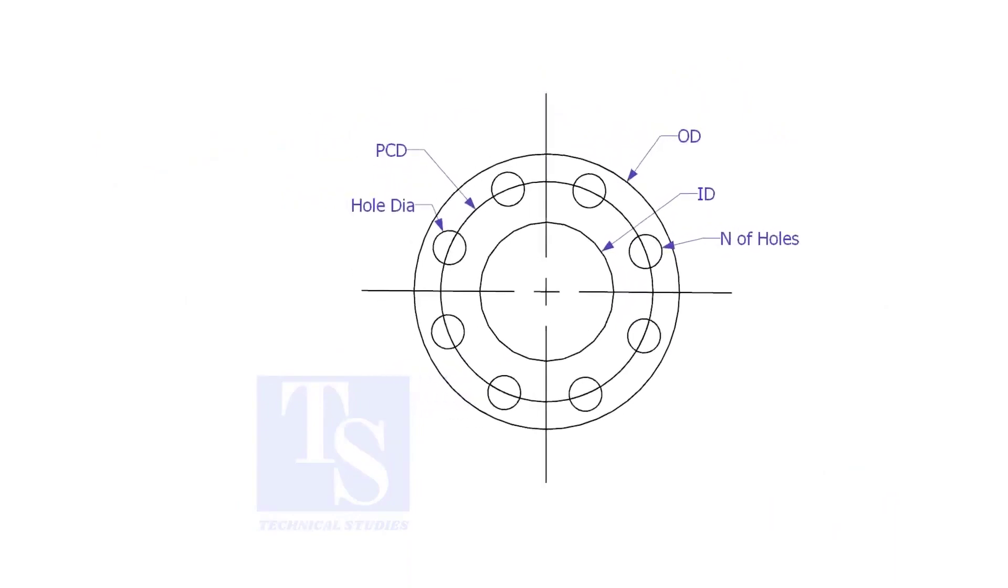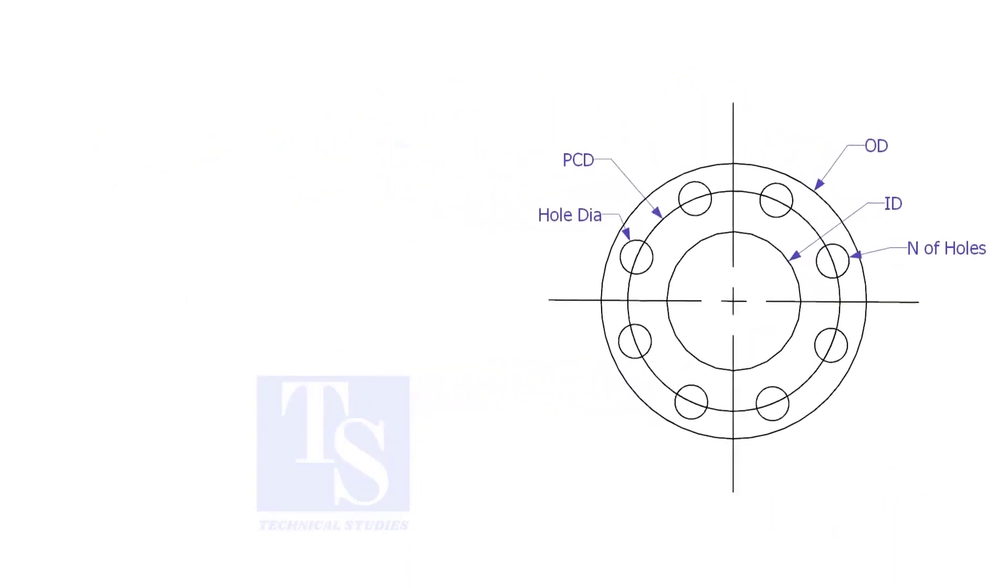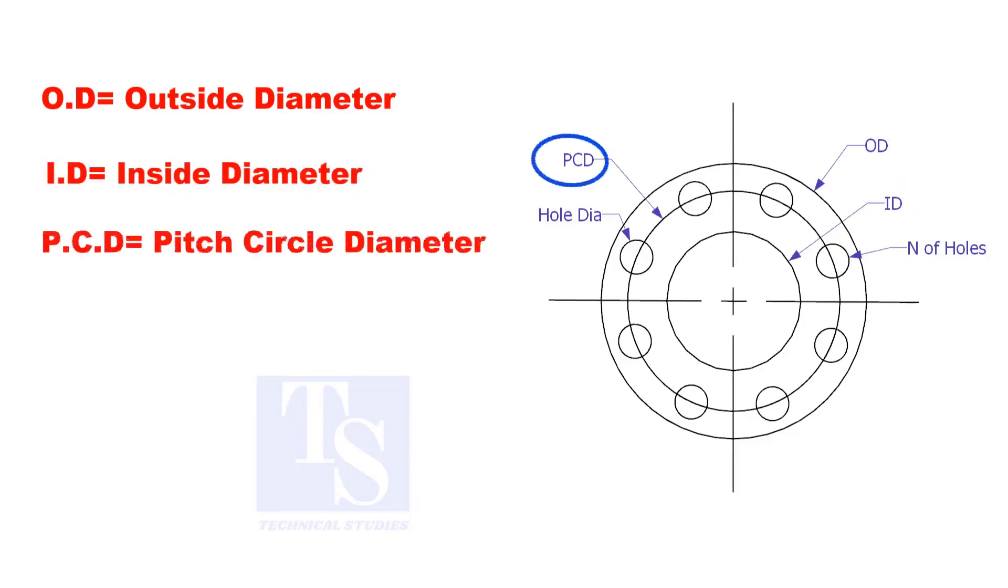To make a plate flange, we need to know the following things: OD, the outside diameter; ID, the inside diameter; PCD, the pitch circle diameter; number of holes; and the hole size.